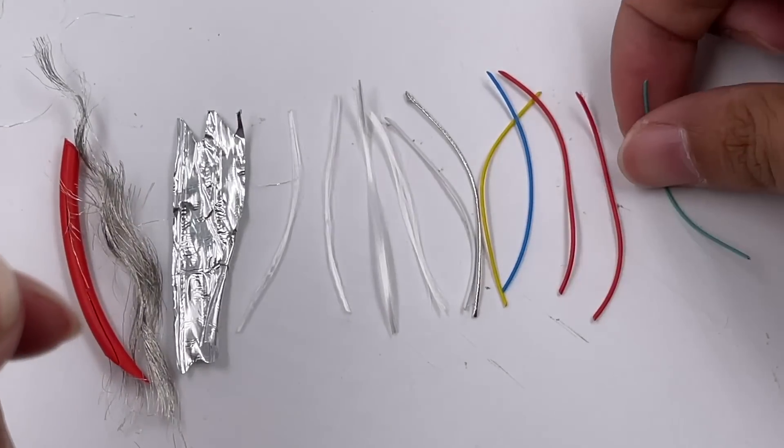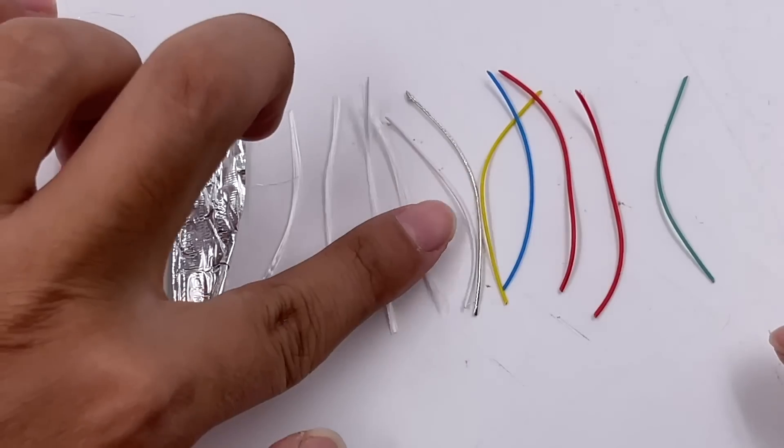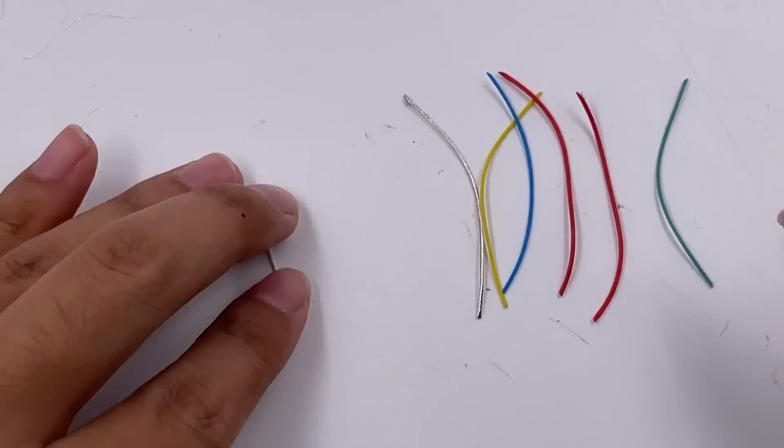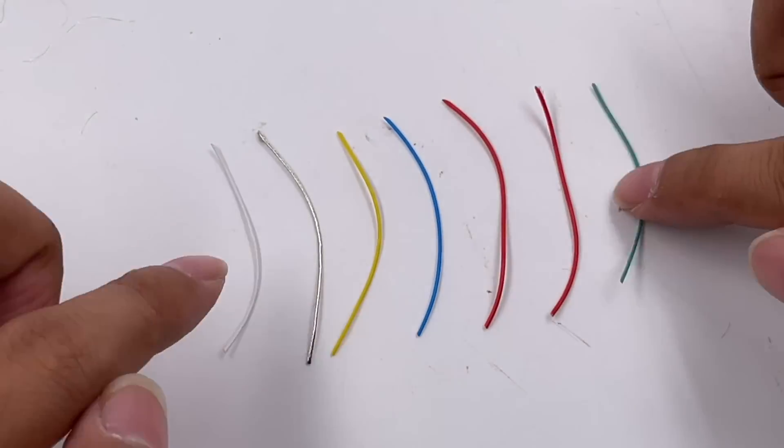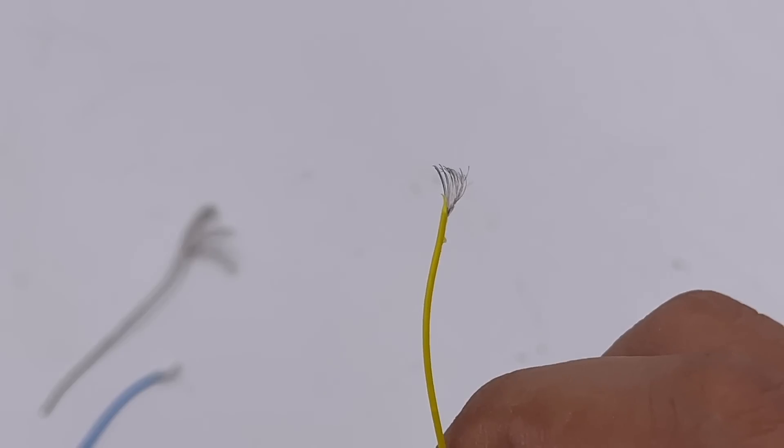And there are seven wires in total, including one silver, two red, one white, one yellow, one blue, and one green. We will introduce those wires later on, and each wire is mixed with nylon fibers.